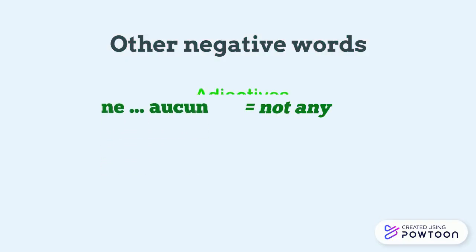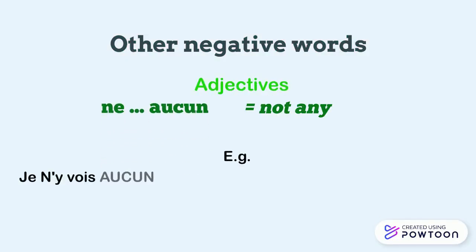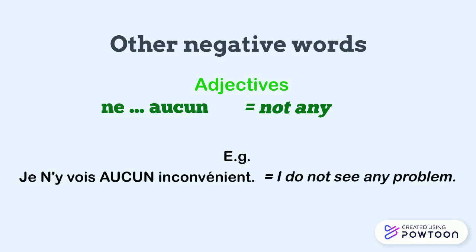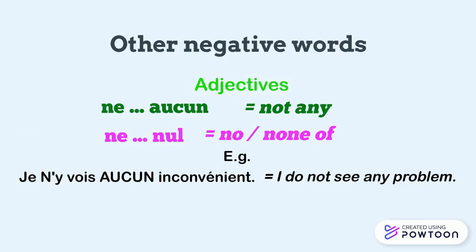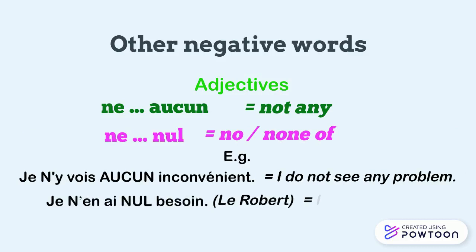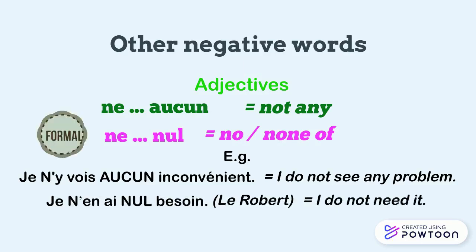Aucun can also be an adjective. For instance, je ne vois aucun inconvénient — I do not see any problem. Ne nul, meaning no, is also an adjective. For instance, je n'en ai nul besoin — I do not need it. Nul is quite formal.